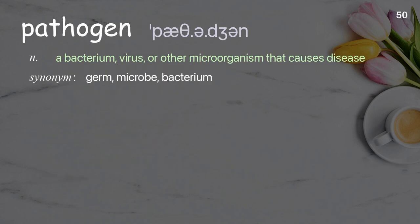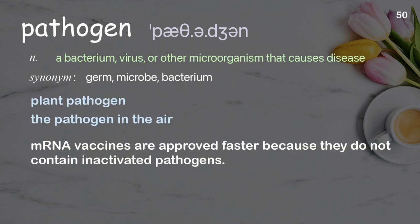Pathogen: a bacterium, virus, or other microorganism that causes disease. Examples: plant pathogen, the pathogen in the air. mRNA vaccines are approved faster because they do not contain inactivated pathogens.